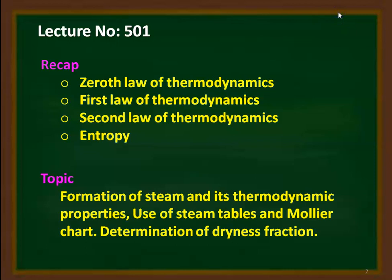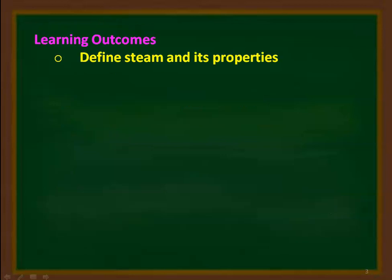Now in this topic, Properties of Steam, we will be studying about the formation of steam and its thermodynamic properties, use of steam tables and Mollier charts, and determination of the dryness fraction of steam. By the end of the lecture, you will be able to define steam and its properties — that is the learning outcome for this lecture.